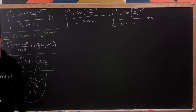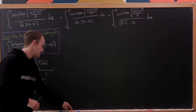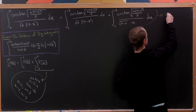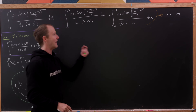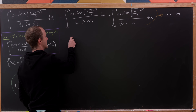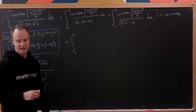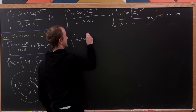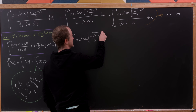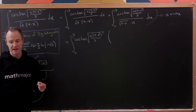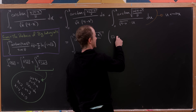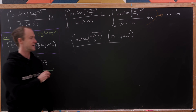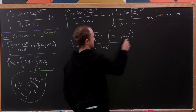We do a trivial substitution replacing u back with x, then combine the two integrals by finding a common denominator. This gives us the integral from zero to two of arctan of √(x(4−x))/2 multiplied by (√x + √(4−x)), all over x(4−x).